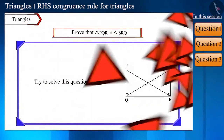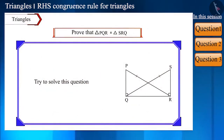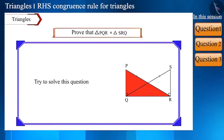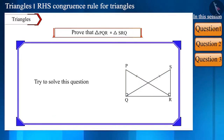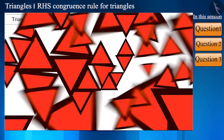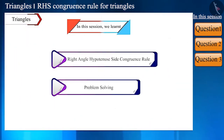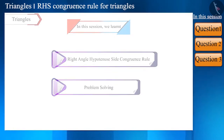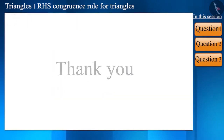Now try to solve this question. With the help of the figure, prove that triangle PQR is congruent to triangle SRQ when PR is equal to SQ. So friends, in this session we solved a few questions based on the right angle hypotenuse side congruence rule. Let's meet in the next video. Thank you.